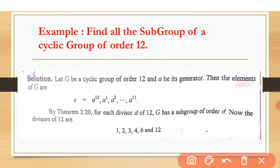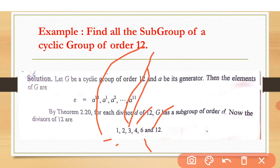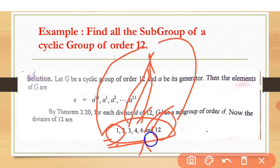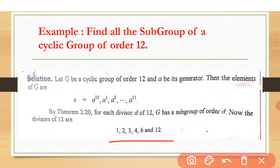The divisors of 12 are 1, 2, 3, 4, 6, and 12. The table of 1 goes into 12 twelve times; the table of 2 goes into 12 six times; the table of 3 goes into 12 four times; the table of 4 goes into 12 three times; the table of 6 goes into 12 two times; and the table of 12 goes into 12 one time. So these are the divisors of 12.